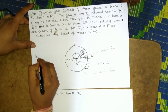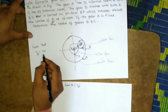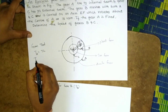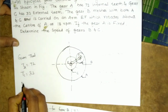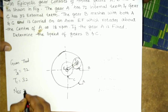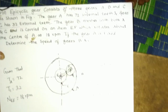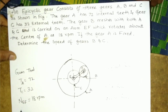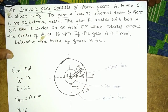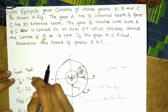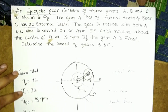The given data: number of teeth on gear A is 72, number of teeth on gear C is 32, rotation of arm EF is 18 RPM, and speed of gear A is 0 (gear A is fixed). We now need to find the number of teeth for gear B.